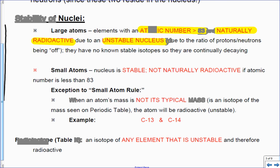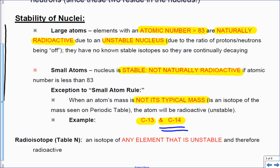Small atoms on the other hand are stable and not naturally radioactive because they have less than 83. The exception to the small atom rule: when an atom's mass is not its typical mass, is an isotope of the mass on the periodic table. Carbon-13 and carbon-14 are prime examples - they are radioactive. Carbon-14, something we talk about all the time with dating. We can figure out the amount of carbon-14 left and we knew how much carbon-14 is generally in any living life form, and then we can figure out how many years it's been since it died.